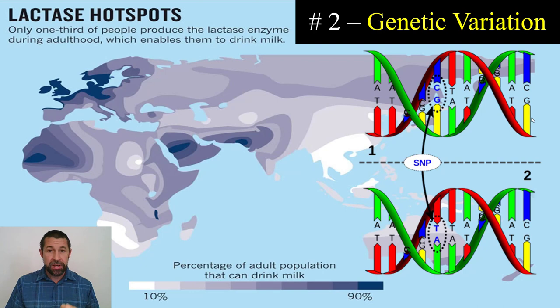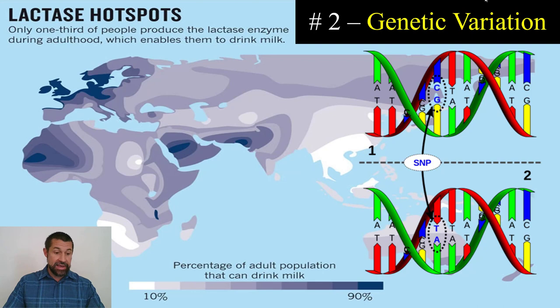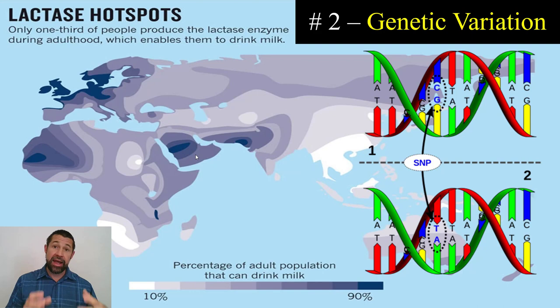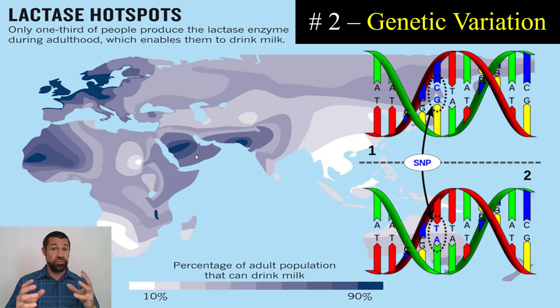It has everything to do with your genes. If your ancestors hail from a region of the world where the domestication of the cow has been part of the culture for thousands of years — like Northern Europe or places in Africa and the Middle East — then you likely have the alleles for lactose persistence.